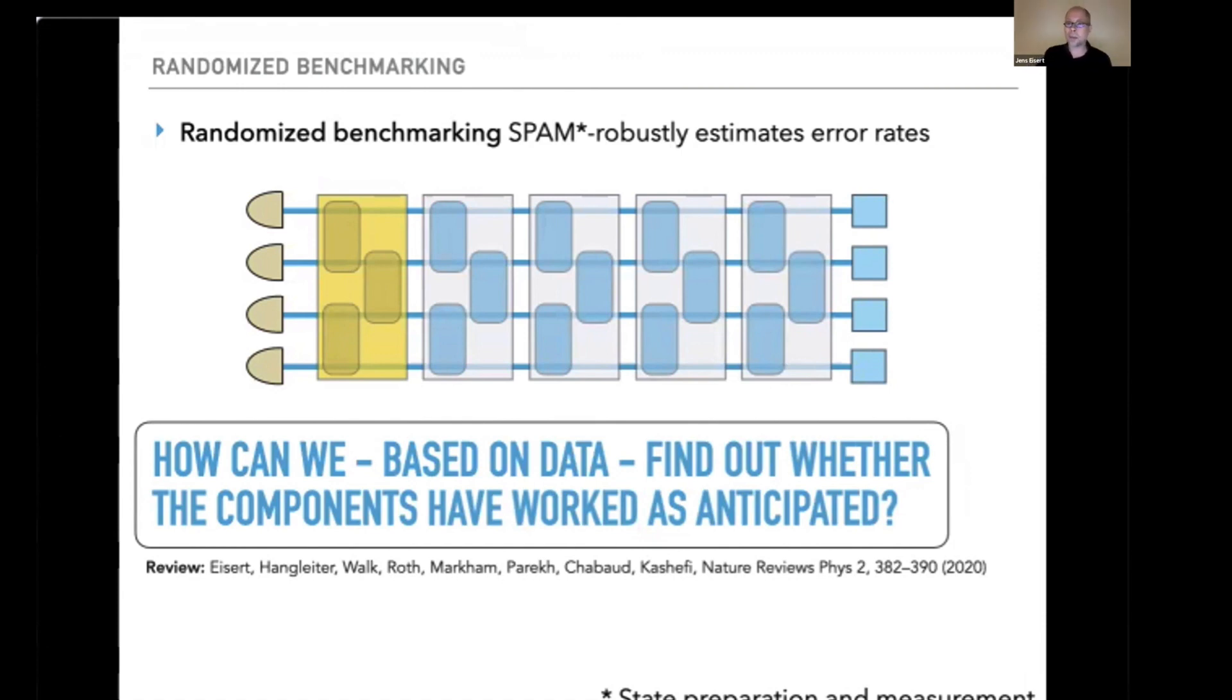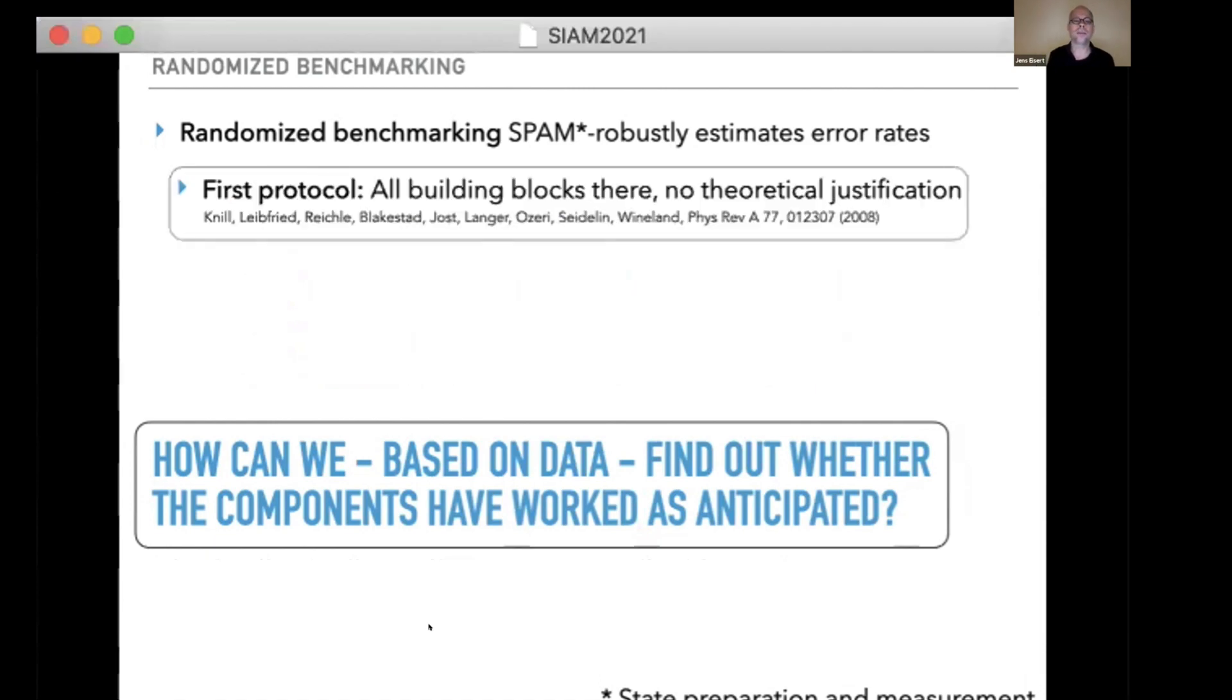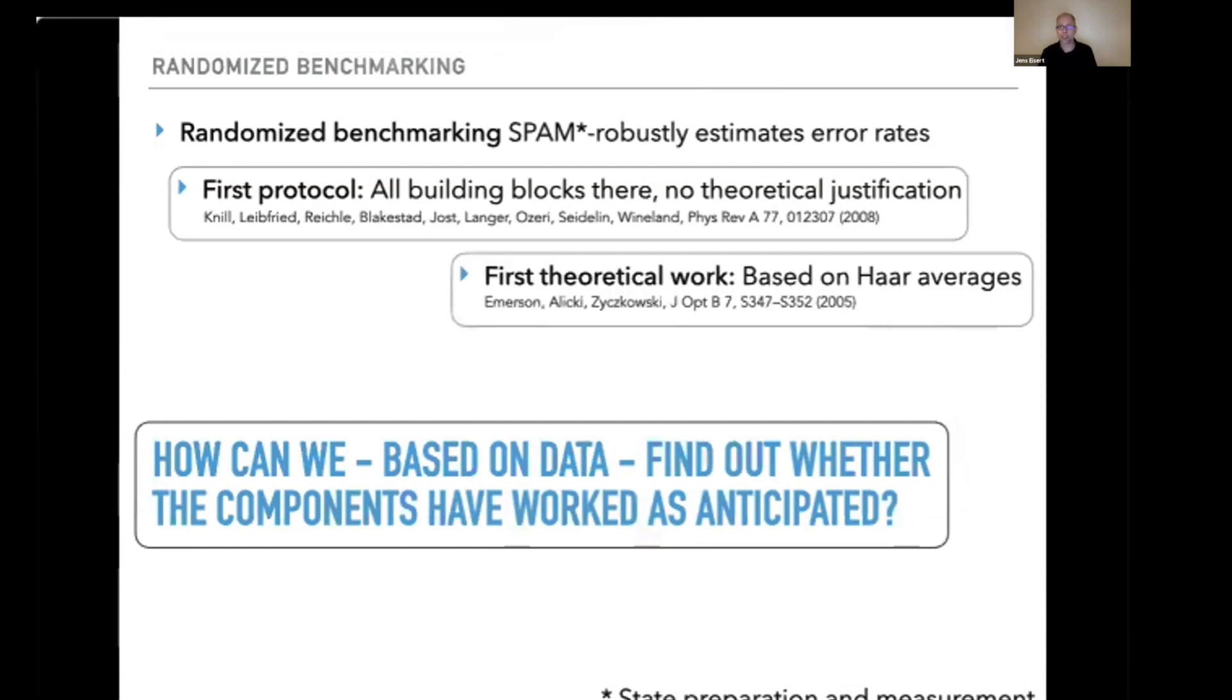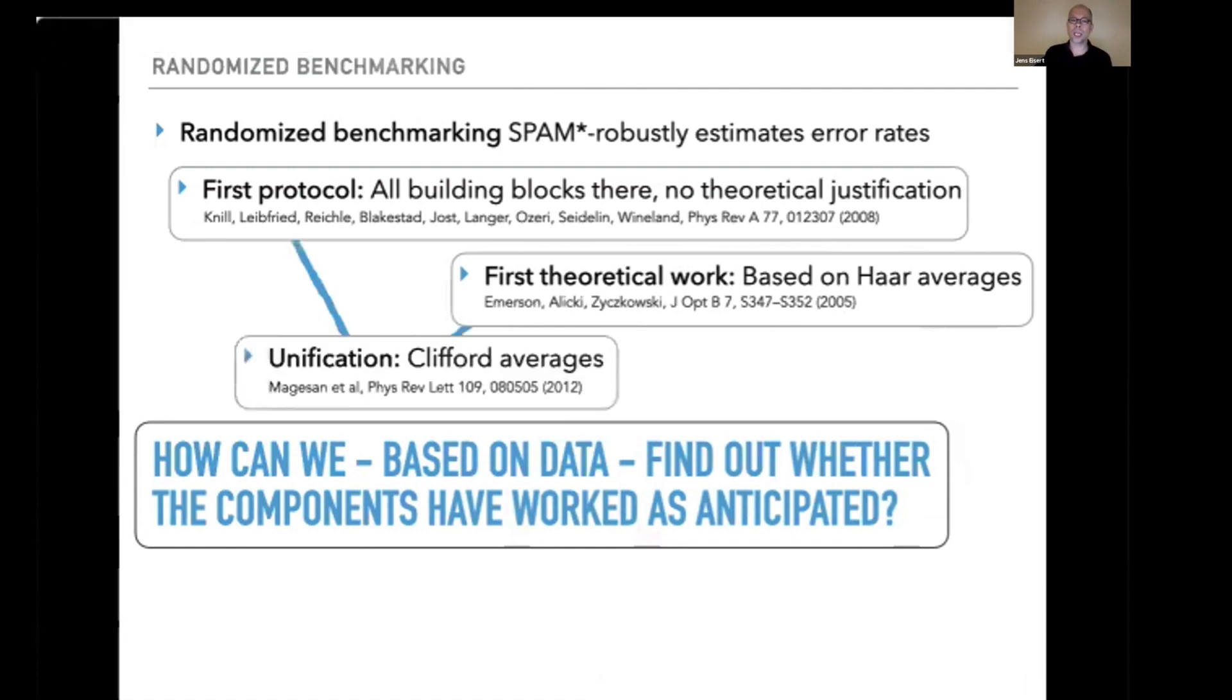The first protocol of randomized benchmarking was an experimental paper that nicely presented basically all building blocks but didn't quite provide a theoretical justification. Work by Emerson and others provided a theoretical justification based on Haar random unitaries, which are not really practical or efficiently implementable. The unification was done using efficiently implementable Clifford averages, stressing the importance of resorting to group averages when estimating error rates in a data-driven fashion of quantum gates.